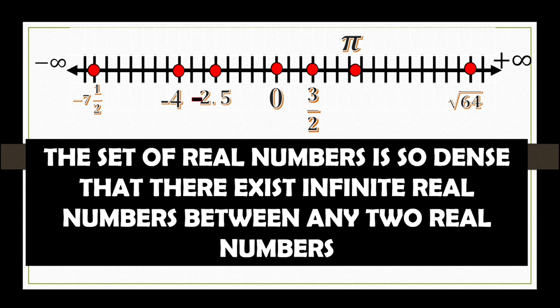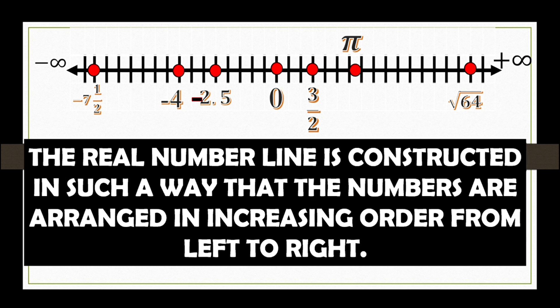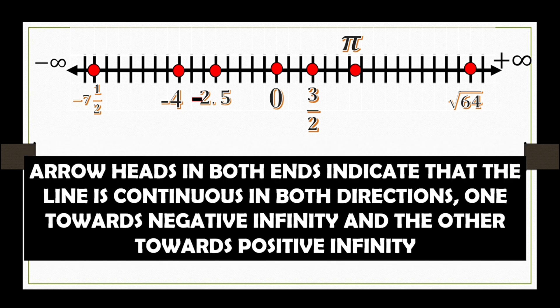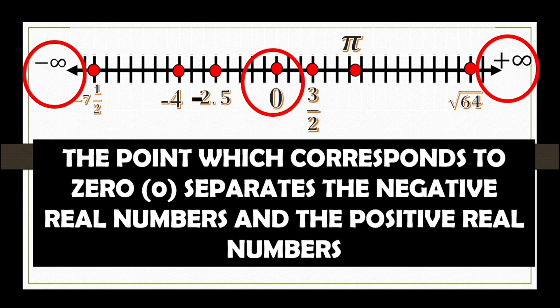The set of real numbers is so dense that there exists infinite real numbers between any two real numbers. The real number line is constructed in such a way that the numbers are arranged in increasing order from left to right. Arrowheads in both ends indicate that the line is continuous in both directions, one towards negative infinity and the other towards positive infinity. The point, which corresponds to 0, separates the negative real numbers and the positive real numbers.